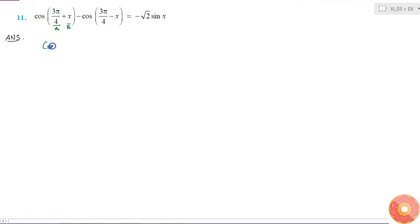So I will write the formula: cos(a + b) is equal to cos a cos b minus sin a sin b.